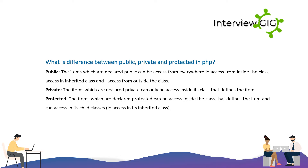What is the difference between public, private, and protected in PHP? Public: items declared public can be accessed from everywhere — inside the class, an inherited class, and from outside the class. Private: items declared private can only be accessed inside the class that defines the item.